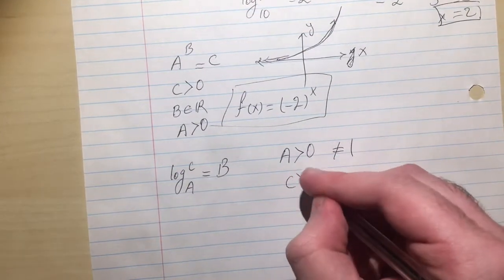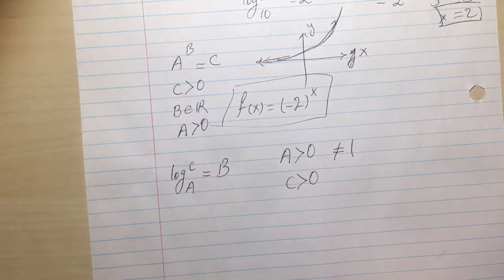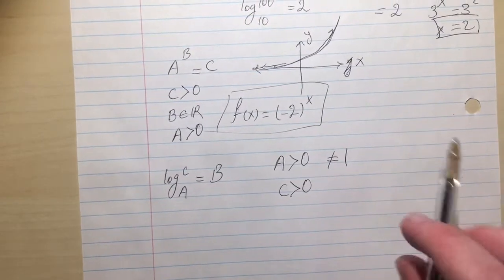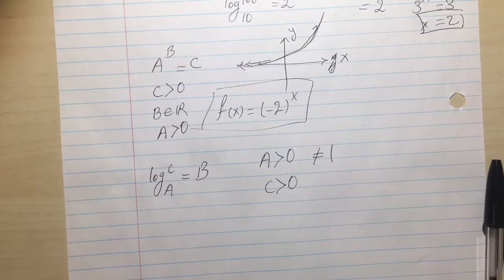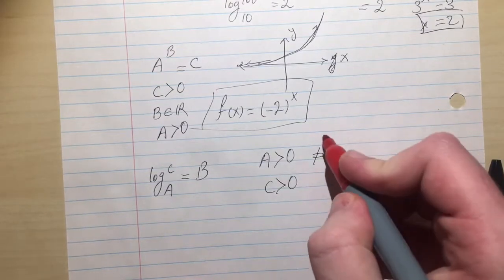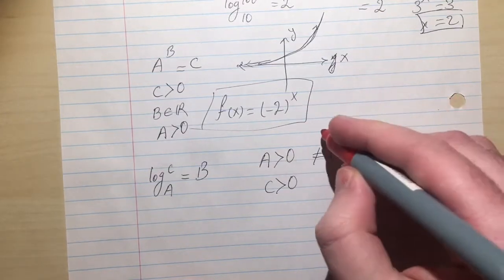So C is obviously greater than zero, and that's it. But the thing that's new here is this restriction. So why are we saying that?